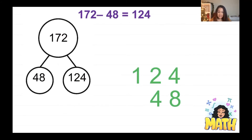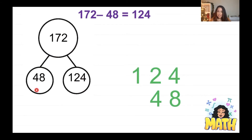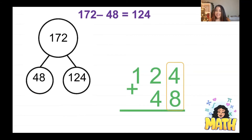Let's say 48 students buy hot lunch and 124 students bring their lunch — how many students are there in all? If we need to find the whole, all we have to do is add. I'm going to take my part and my part, line them up, and add them. The first thing I do is look at my ones place: what is 4 plus 8? When you're adding, you don't have to ask more on the top or more on the floor — you can just add.